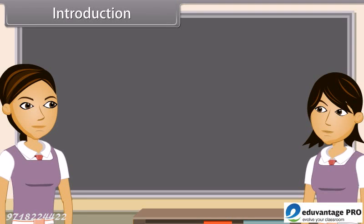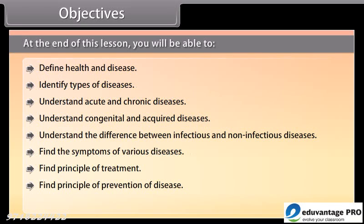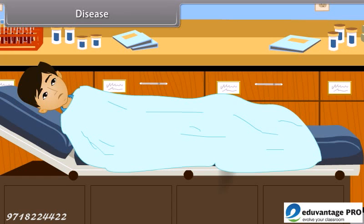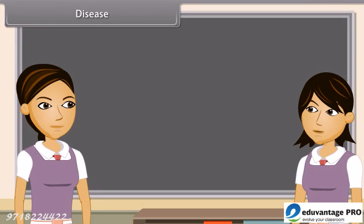Do you know that even in a normal environment, disease can occur? When we are unhealthy, we are having one or more diseases. Disease — what is that? I have read that disease means disturbed ease. Yes, scientifically, disease can be defined as a disordered or incorrectly functioning organ, part, structure or system of the body resulting from the effect of genetic or developmental error.